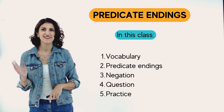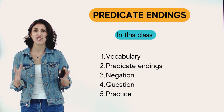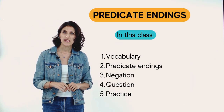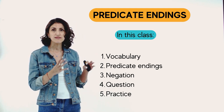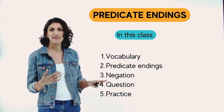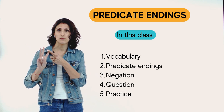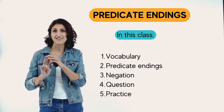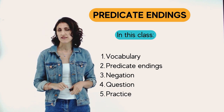Ta yormusiz? So, to start this lesson, we need to learn a little bit of vocabulary that will help us learn this predicate endings topic. And then we will learn the sentences in three formats: when we confirm, when we negate, and when we ask. And then we'll have a little practice.